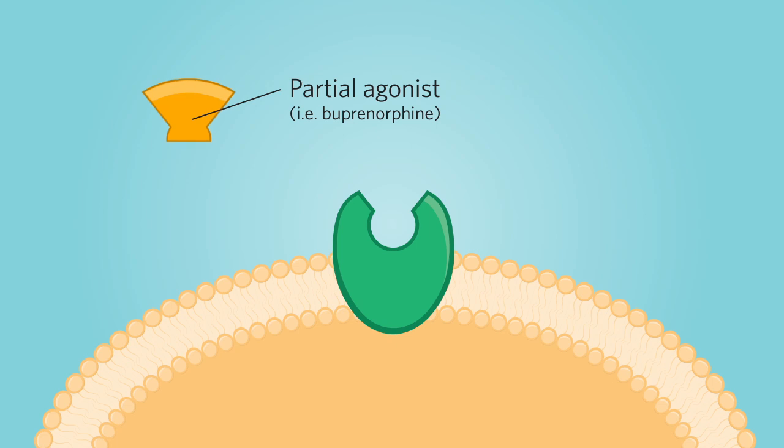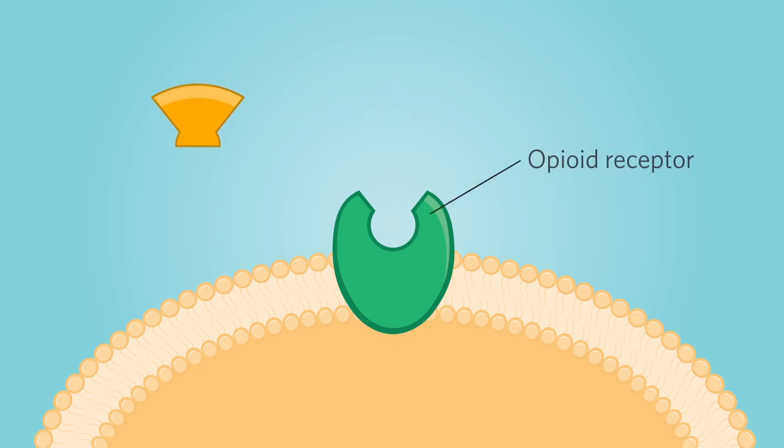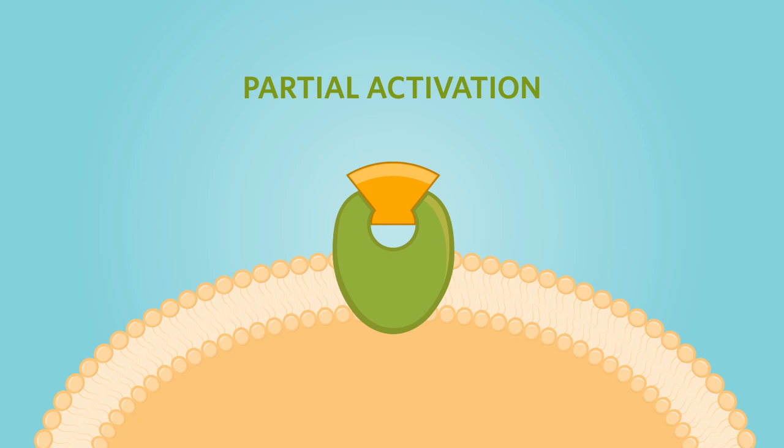Buprenorphine is an example of a partial opiate agonist. When it binds to the opiate receptor, it stimulates the opiate receptor partially. This is enough to alleviate symptoms of opiate withdrawal and to help with cravings for opiates.